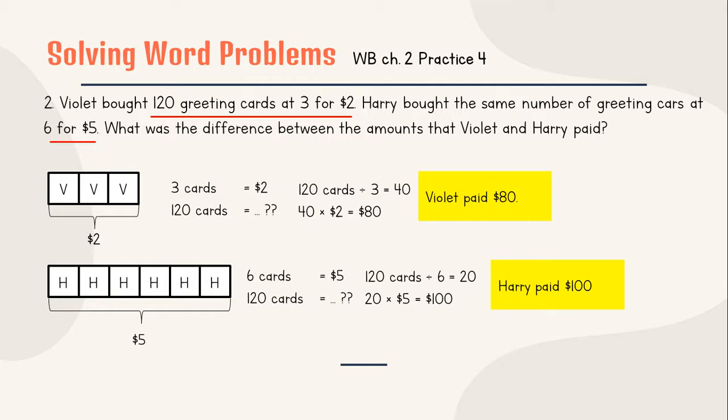The question is the difference between the amount that Violet and Harry paid. So Violet paid $80. Harry paid $100. What was the difference? $20. That's it. Yes, if you said that it is kind of confusing, it's okay. Because we are not used to about this kind of sentence. Just remember that if you have 3 for 2, means that one packet equals 3. And that one packet equals $2.